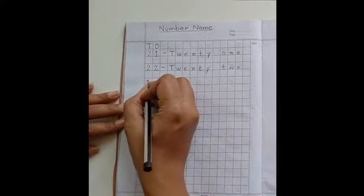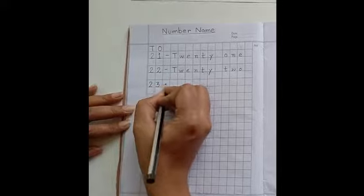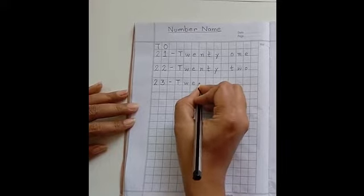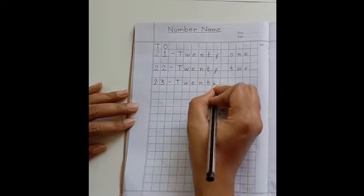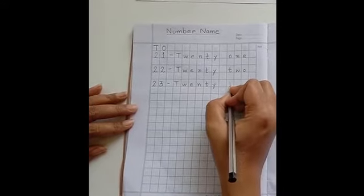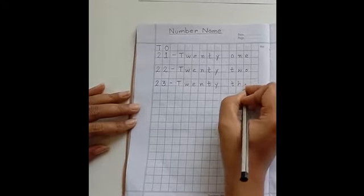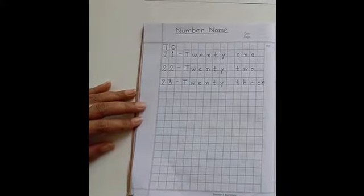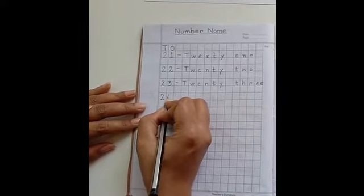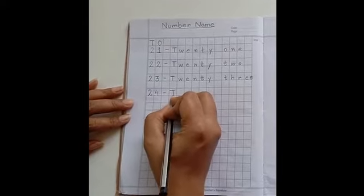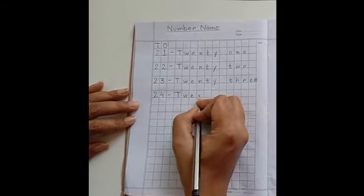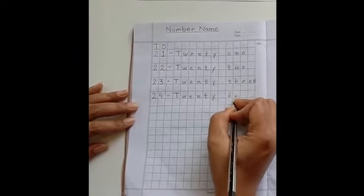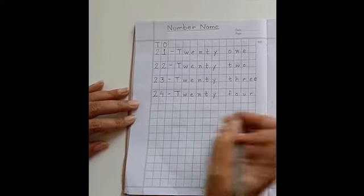Next, 23 - T-W-E-N-T-Y, 20, T-H-R-E-E, 3. 23. And 24 - T-W-E-N-T-Y, 20, F-O-U-R, 4. 24.